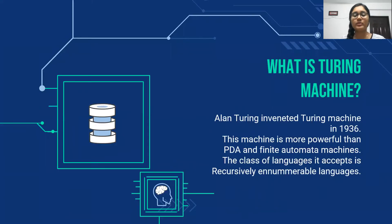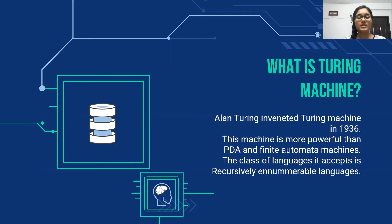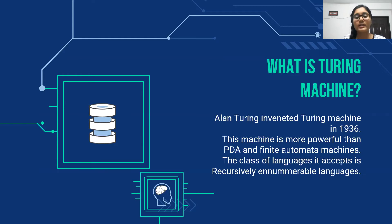In this slide, I'm going to tell what a Turing machine is. It was invented by Alan Turing in the year 1936. This machine is considered more powerful than the pushdown automata and the finite automata, and the reasons will be discussed in the further slides. Also, the class of languages that this machine accepts is recursively enumerable languages.